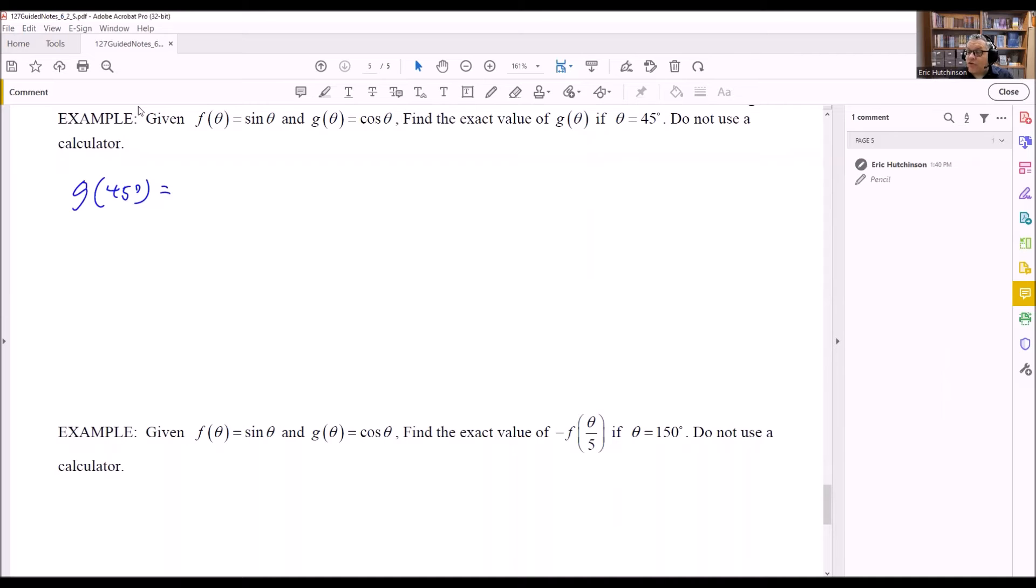Now to do that, that means that we have to put 45 into the cosine here since this is what we're given. So that means that now g(45°) means that we put the 45 in everywhere we see a theta. That's what this notation means here. So we want to find cos(45°).